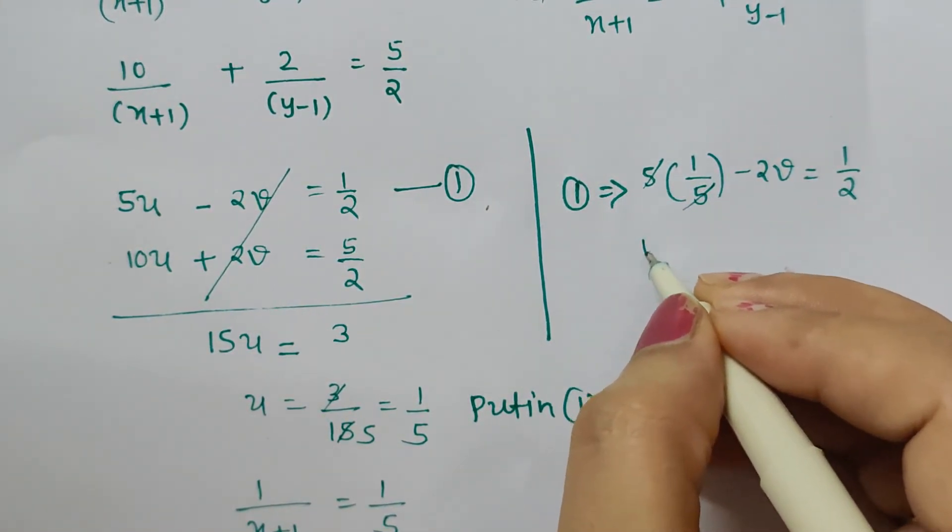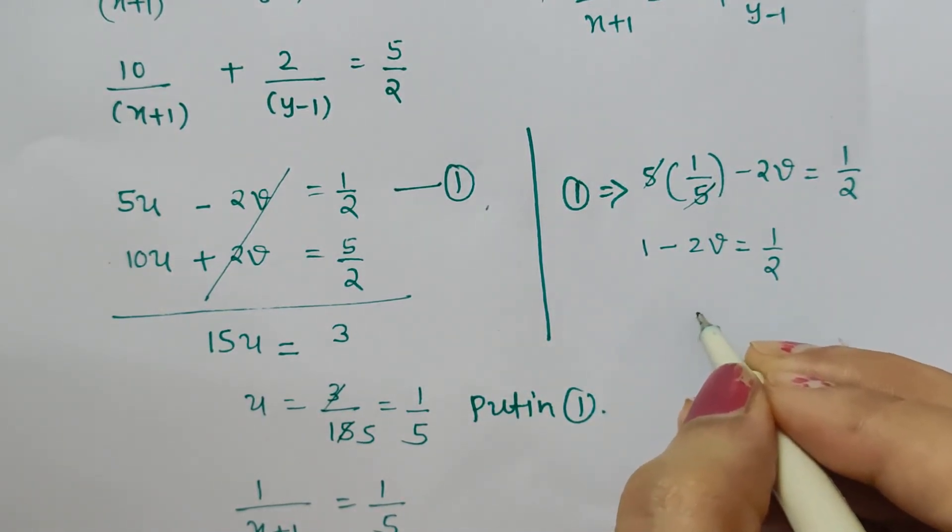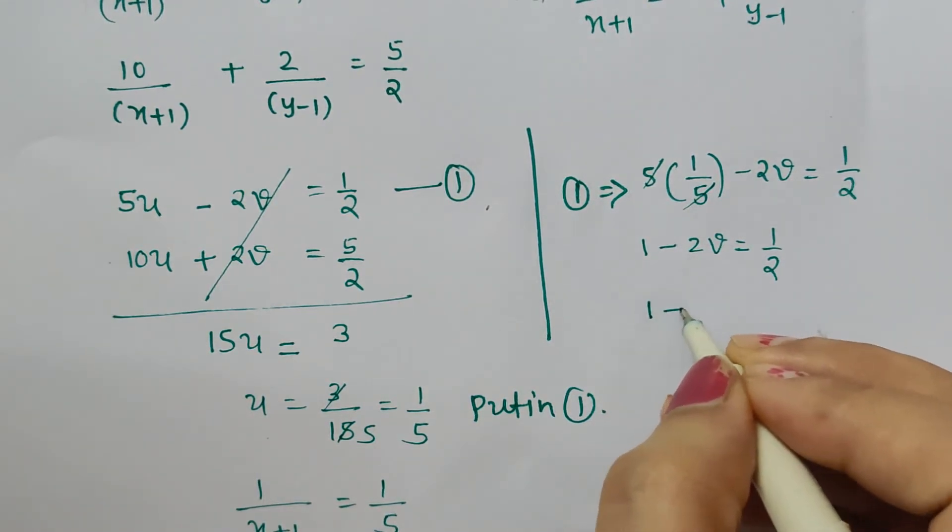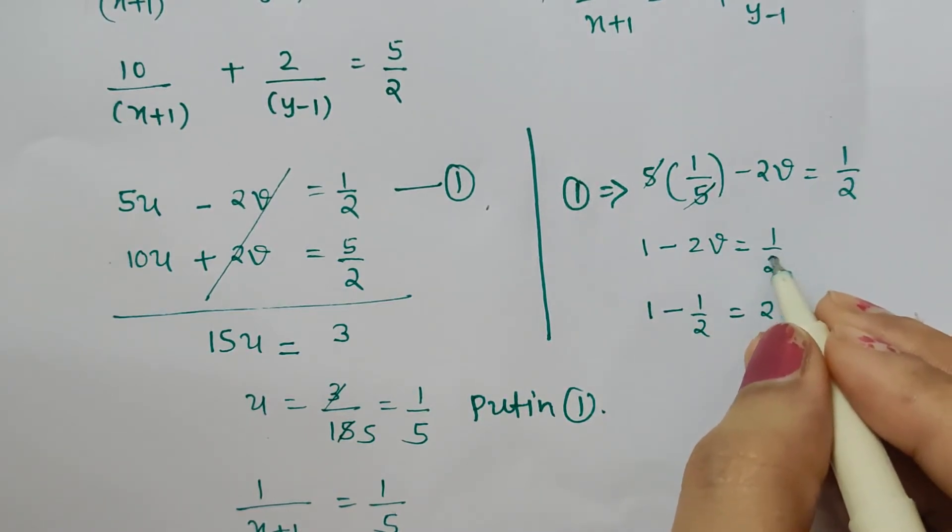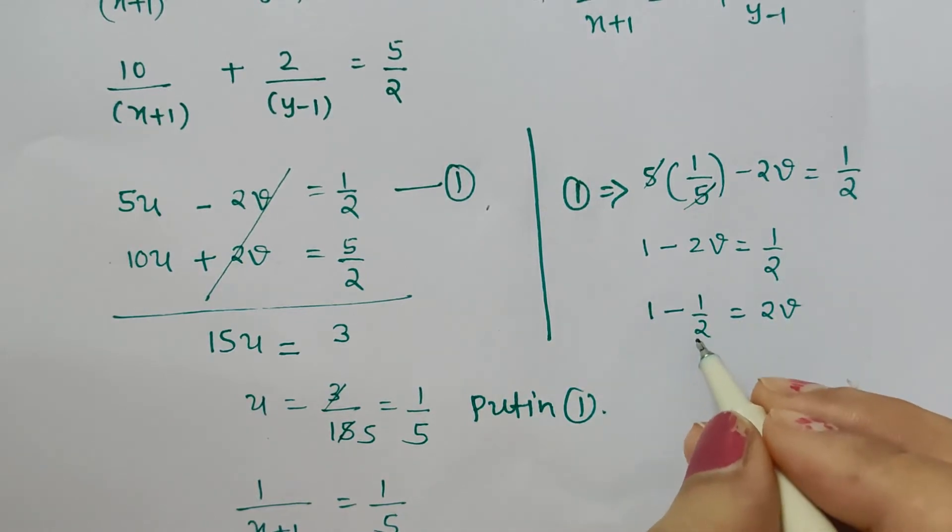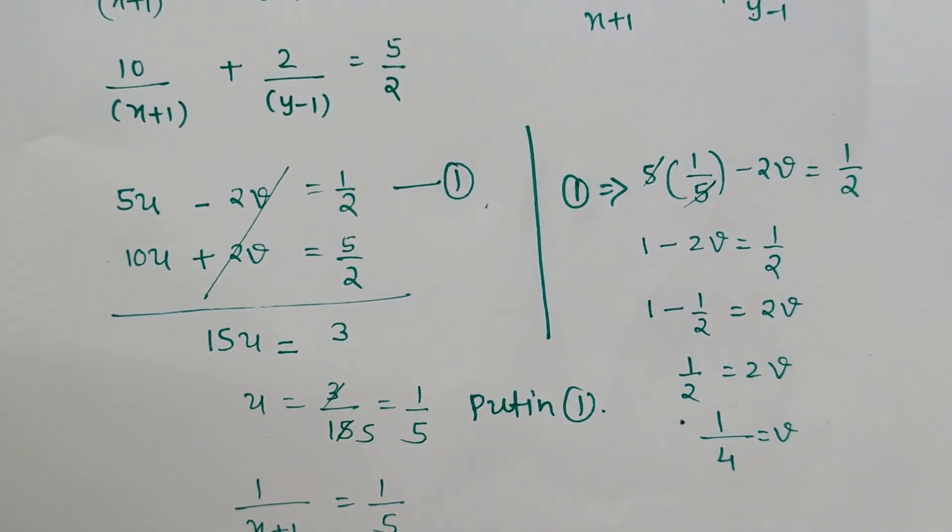Now this 5 and 5 get cancelled, only 1 is left: 1 - 2v = 1/2. Let's shift this -2v to that side, so it will be +2v, and 1/2 to the left-hand side as -1/2. There will be a change of sign when they are transposed. 1 - 1/2 = 1/2, so 1/2 = 2v, which gives 1/4 = v. The value of v obtained is 1/4.